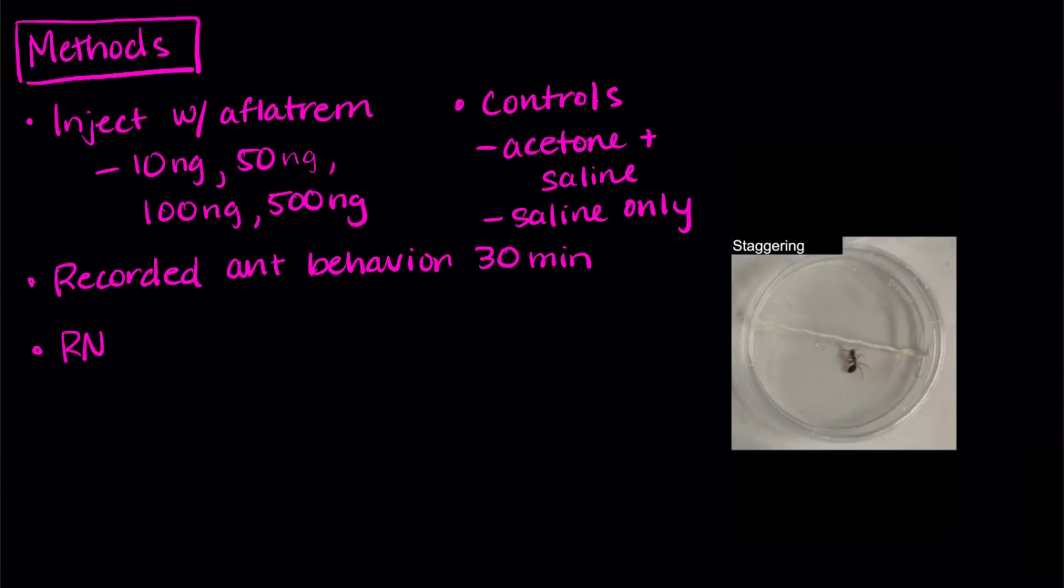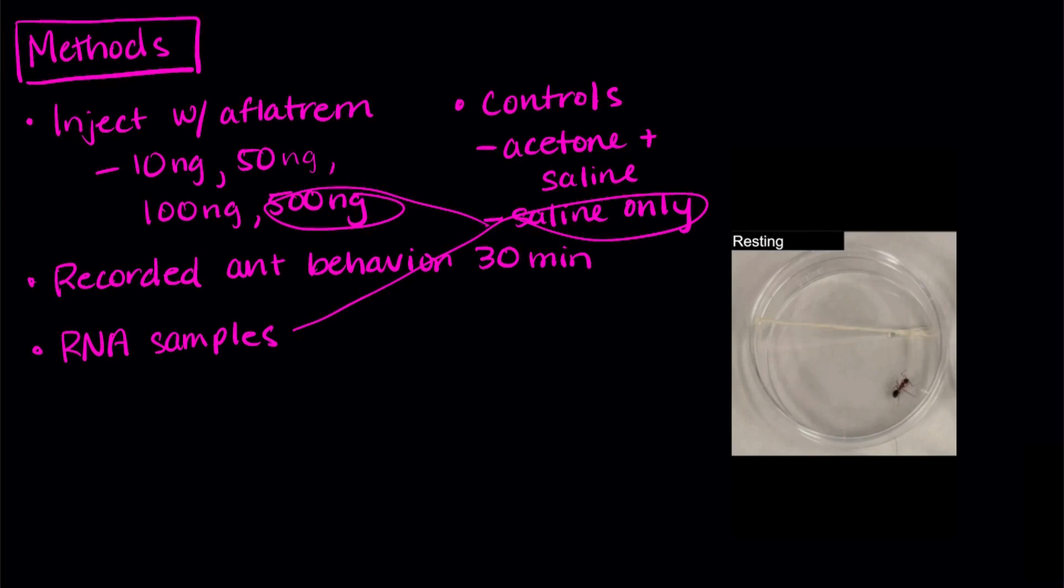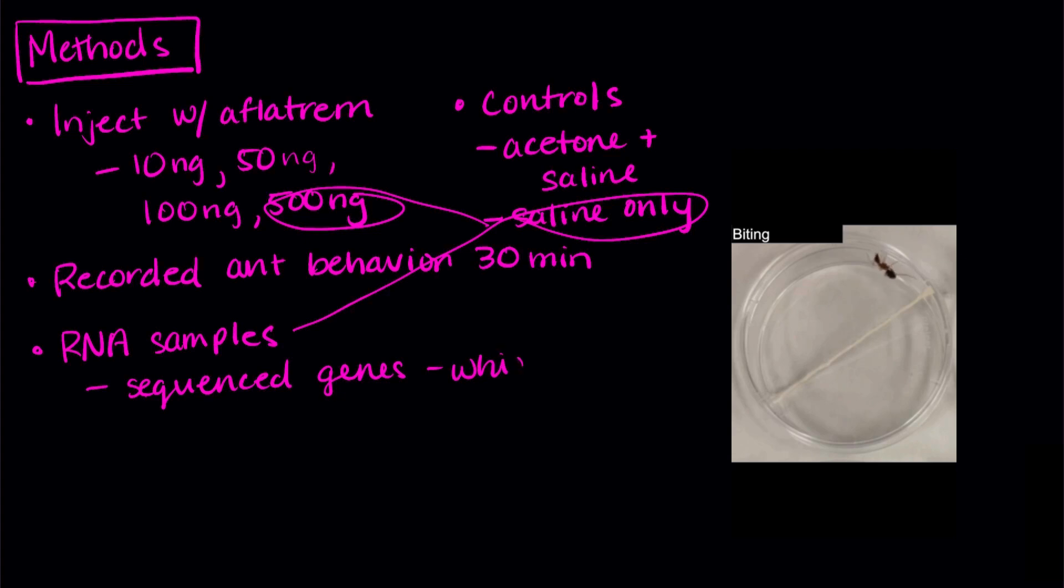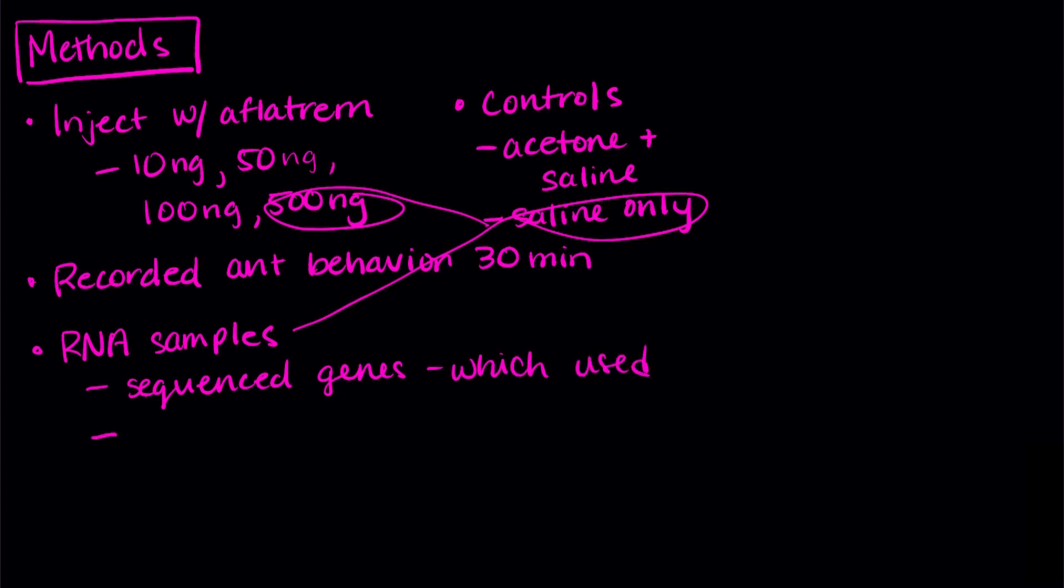After the behavioral analysis, the researchers then took samples of RNA from the saline control group and the group injected with the most afflatrem. Then, they sequenced genes from the RNA to see which were being used and how much they were being used. The researchers compared the genes that were affected by afflatrem with previous data about changes in genes when the ants were actually infected by the fungus.